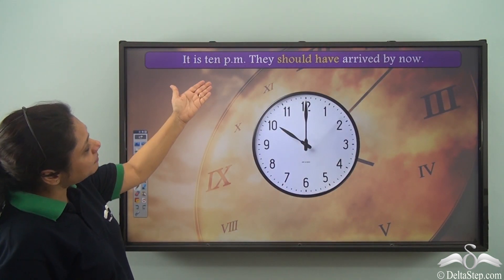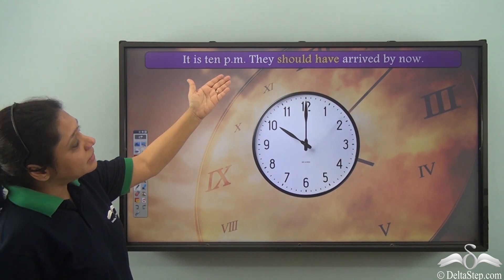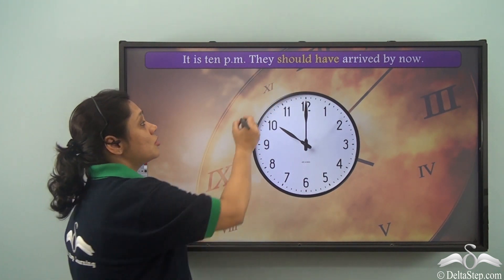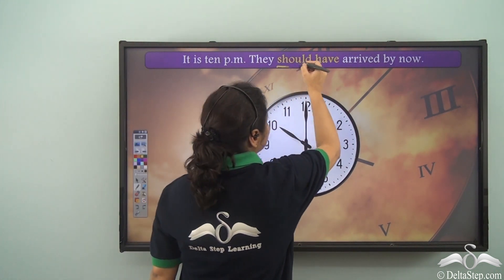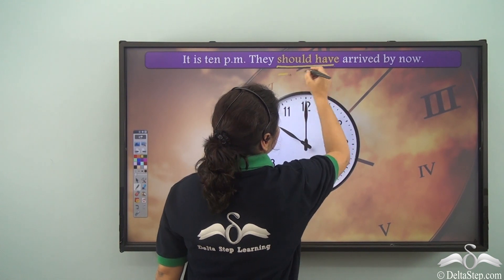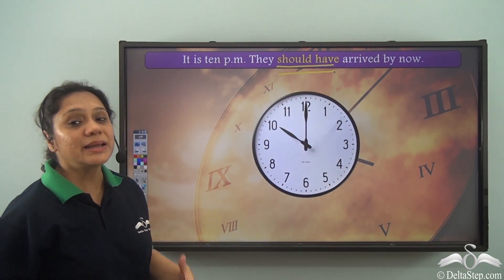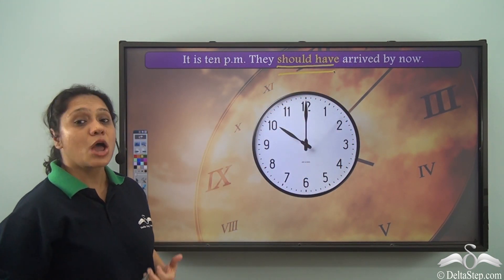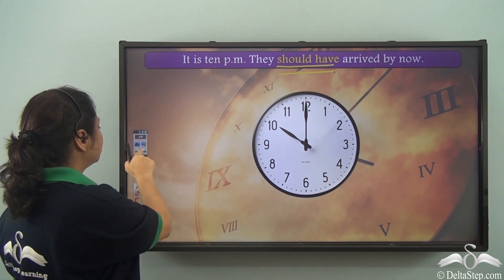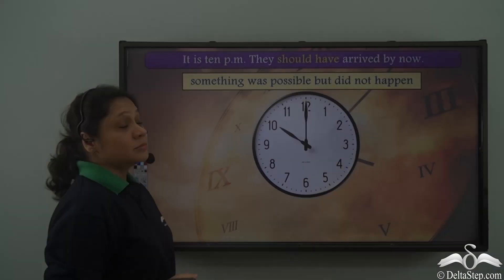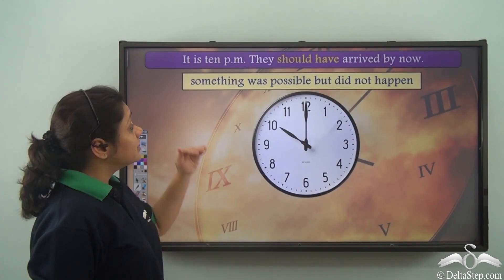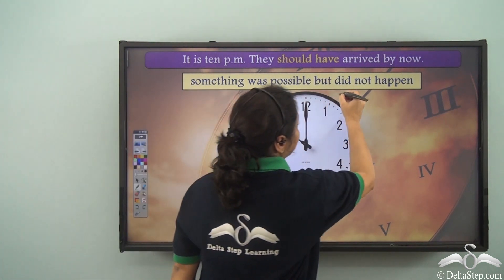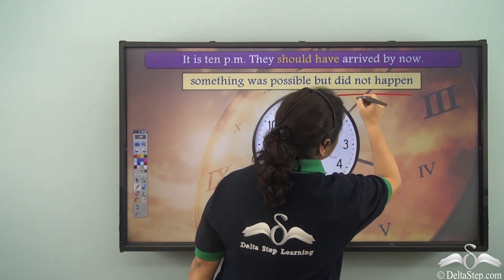It is 10 pm, they should have arrived by now. 'Should have' expresses something completely different in this case — it shows that something was possible but did not happen.